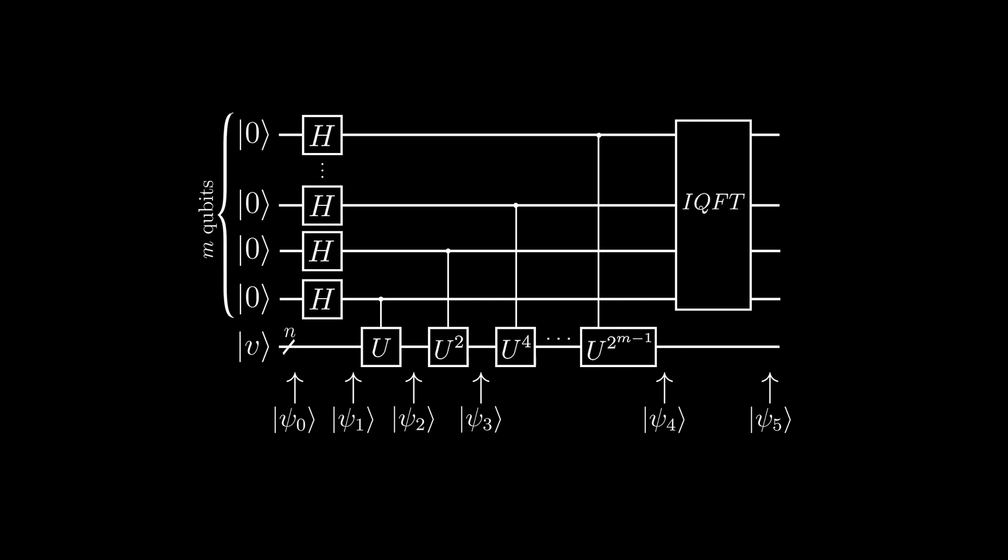U to the power of n is the same as applying U to a qubit n times. Also, you can see we have the inverse quantum Fourier transform at the end of the algorithm.